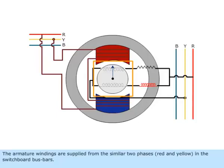The armature windings are supplied from the similar two phases, red and yellow, in the switchboard busbars.